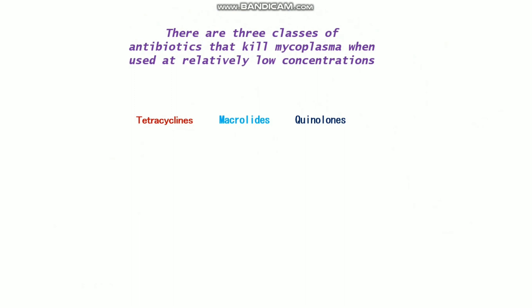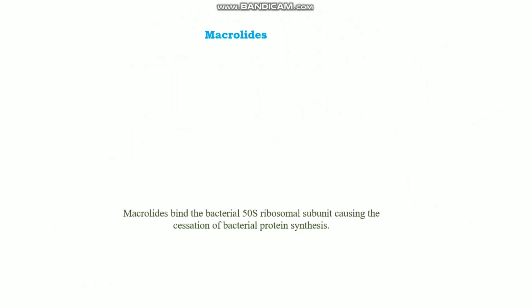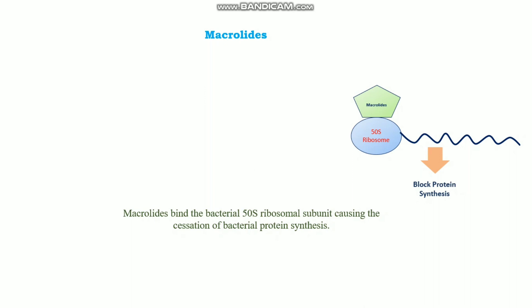These three antibiotics have different modes of action. Macrolides basically bind to the bacterial 50S ribosomal subunit, causing a blockade of bacterial protein synthesis. Basically, this is the 50S ribosomal subunit and the mRNA complex. Macrolides bind to the 50S ribosomal subunit and eventually block protein synthesis.